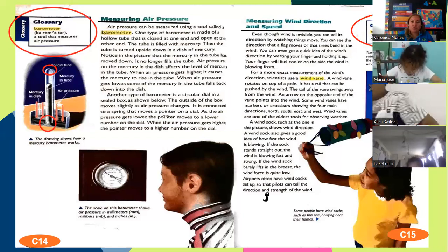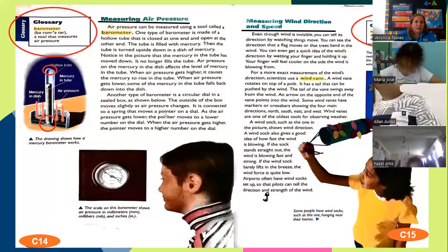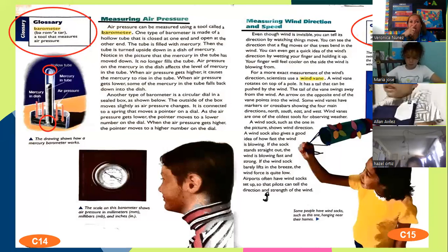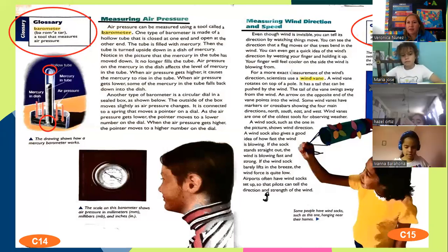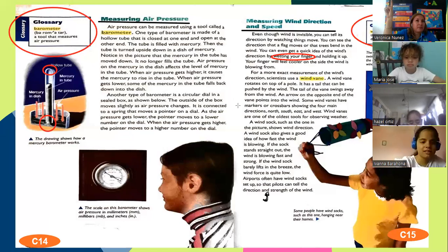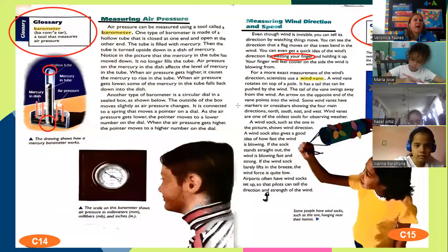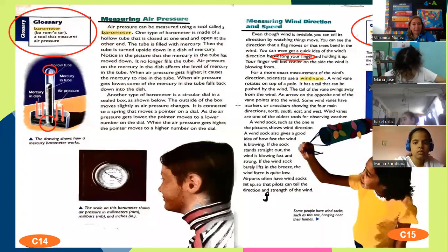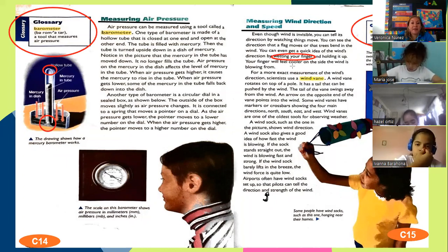You can even get a quick idea of the wind's direction by wetting your finger and holding it up. That's correct. People that were in the ocean, in a ship or in a boat, they used wetting your finger. They could put it inside the mouth. Now that it has saliva, it's wet. They hold it up and feel the wind. It was a very antique technique but it works. Because before, people didn't have a barometer. Your finger will feel cooler on the side the wind is blowing from. Interesting, huh?